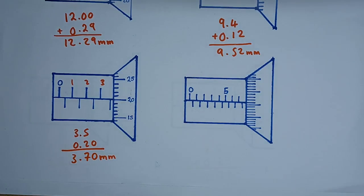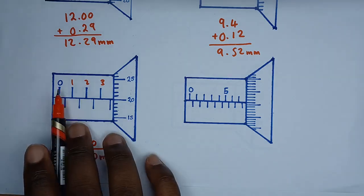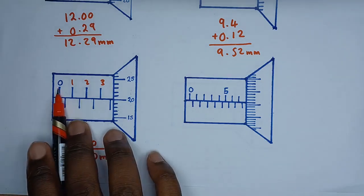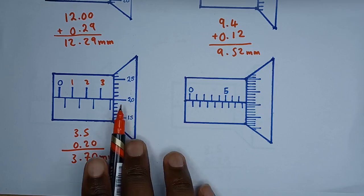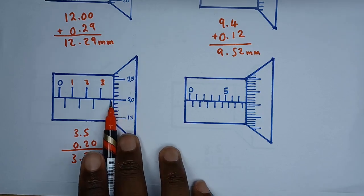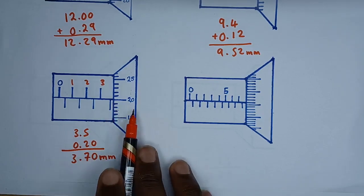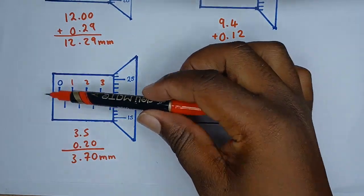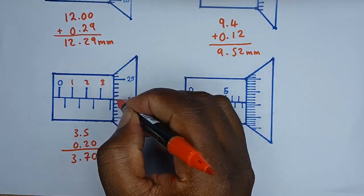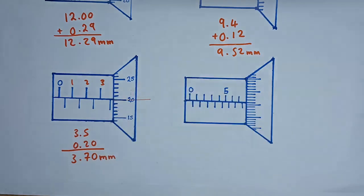Some key things to remember: understand how the values move on the main scale. If the indicator has passed the halfway mark, add 0.5 to the last whole-number reading, then proceed with whatever remains. On the thimble, always identify the marking that is in a straight line with the reference line from the main scale — that gives you the correct decimal reading.